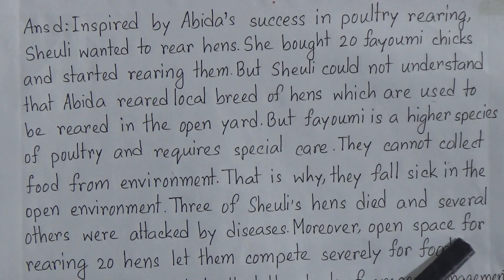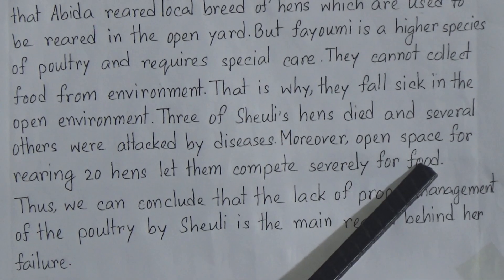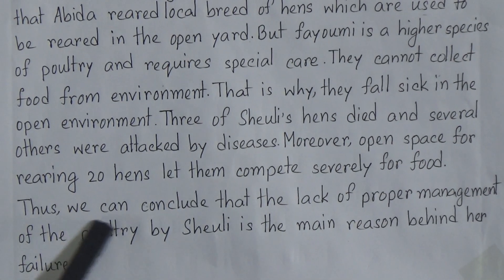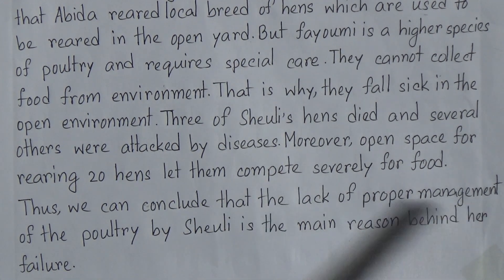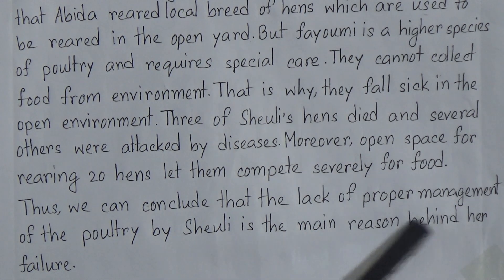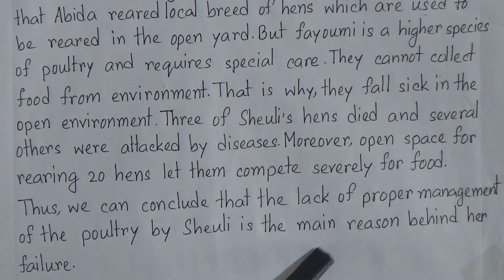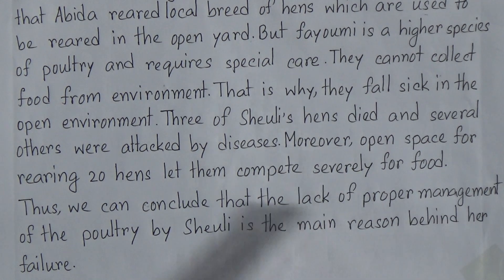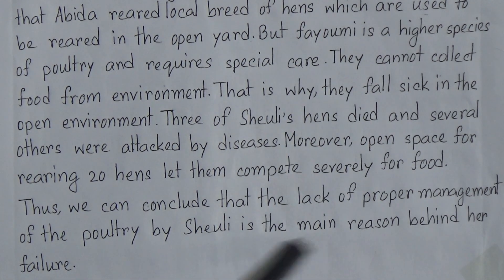Three of Shirley's hens died and several others were attacked by diseases, causing them to start dozing. Moreover, the open space for rearing 20 hens caused them to compete severely for food. Thus, we can conclude that the lack of proper management of the poultry by Shirley is the main reason behind her failure.